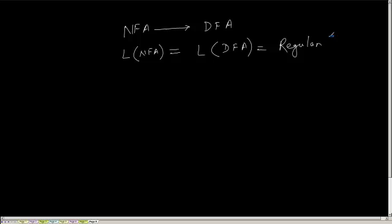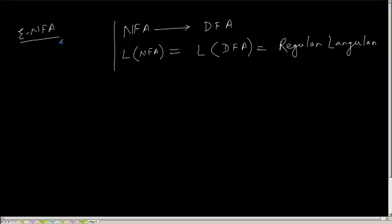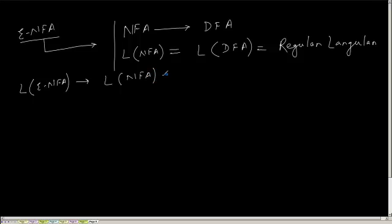So I can say that the language accepted by an NFA is also regular. Now what about NFA with empty transitions — epsilon-NFA? Can I construct a normal NFA from an epsilon-NFA? If that is possible, then I can prove that the language accepted by an epsilon-NFA is the same as the language accepted by an NFA, which is nothing but regular.